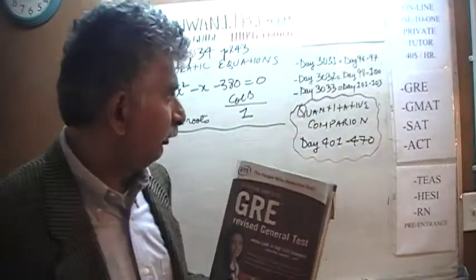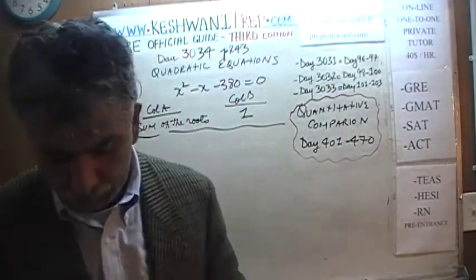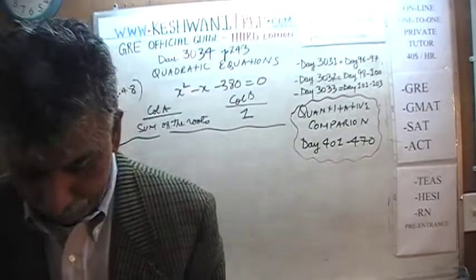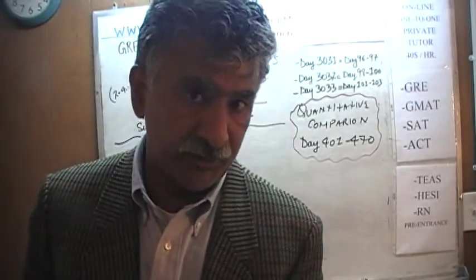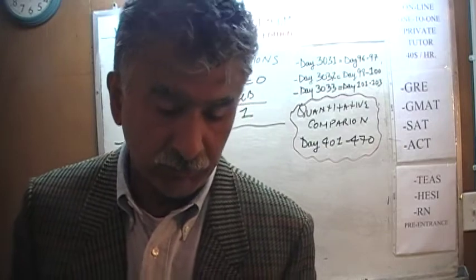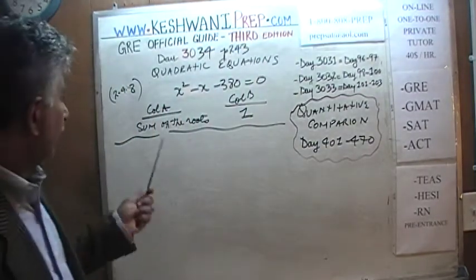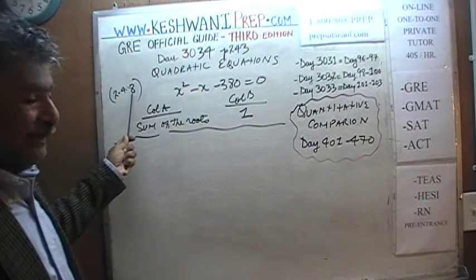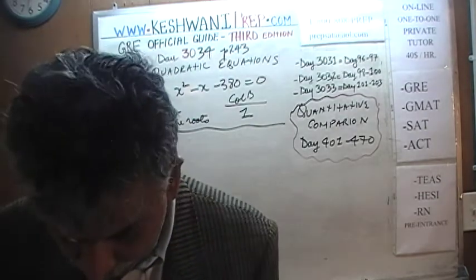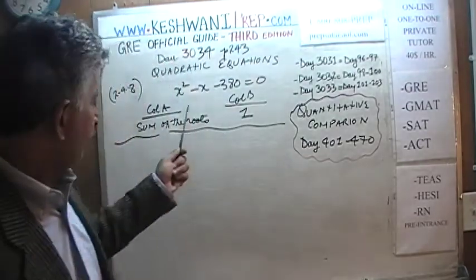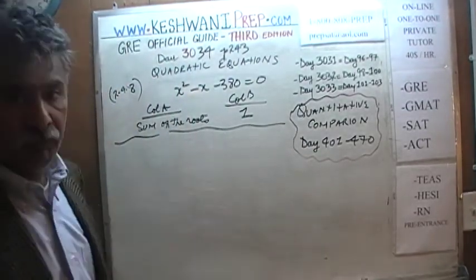If you're interested in watching the original solutions to these problems, you will find them from day number 101 through 103. The two problems we're about to do today and the two quantitative comparison questions we did yesterday — 2.4.6, 2.4.7, 2.4.8, and 2.4.9 — are not in the book. They are bonus problems. The first problem is already on the blackboard.